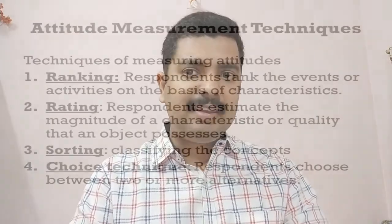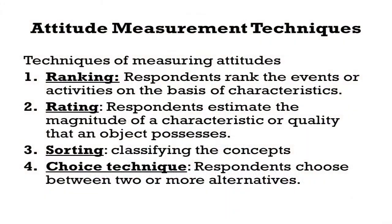Attitude measurement can be of four different categories. First is ranking, where respondents rank events or activities based on characteristics. Second is rating, where respondents estimate the magnitude of a characteristic or quality that an object possesses. Third is sorting, where respondents classify concepts. Fourth is choice, where respondents choose between two or more alternatives.